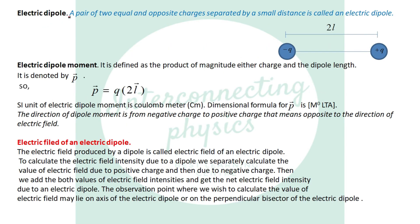So what is an electric dipole? It is a pair of two equal and opposite charges separated by a small distance, and is called an electric dipole. You see here equal and opposite charges separated by some distance that is 2L. Such an arrangement is called a dipole and this 2L is called the dipole length.